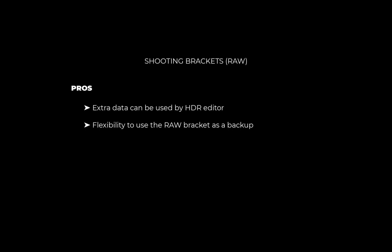What are the disadvantages? The main disadvantage is the file size. RAW file sizes are five times the size of JPEGs. So in a three-bracket shot, that would require around 30 megabytes of storage per shot, and that adds up very quickly if you are shooting a lot of images.